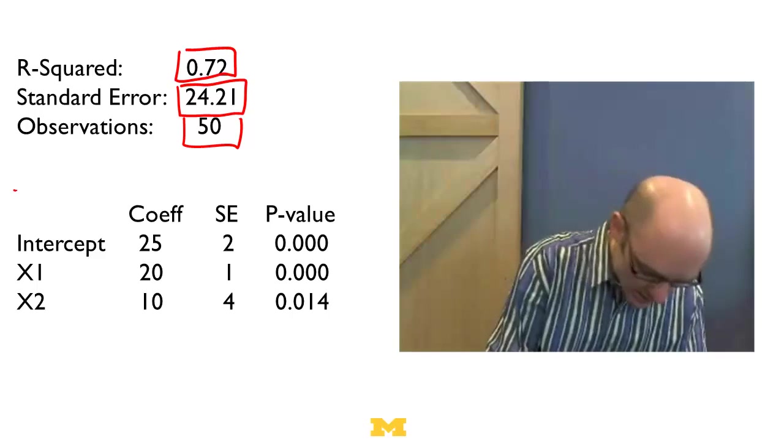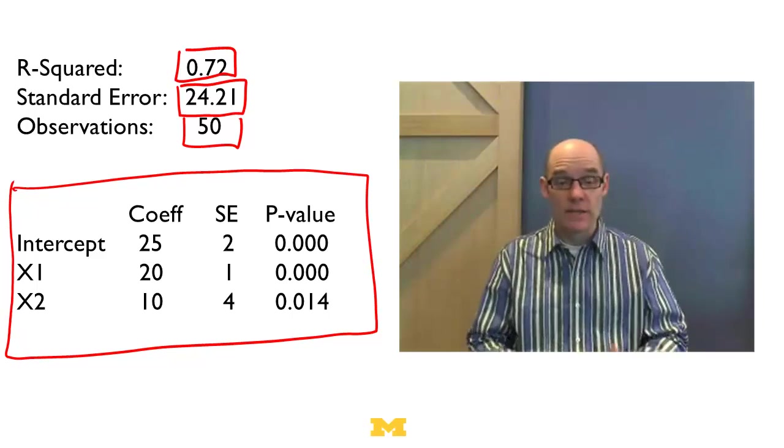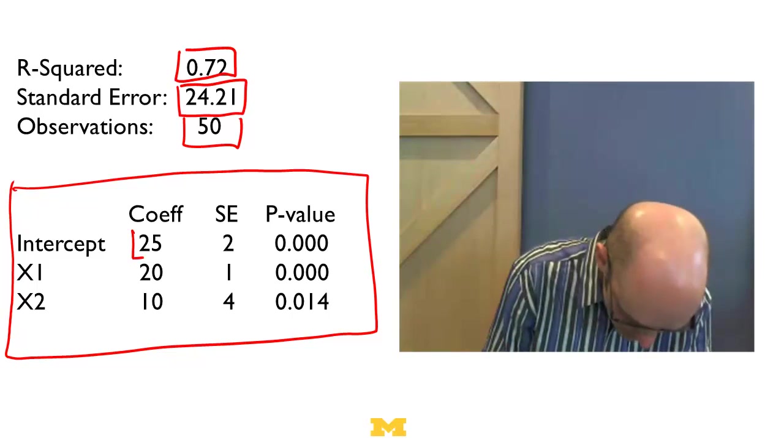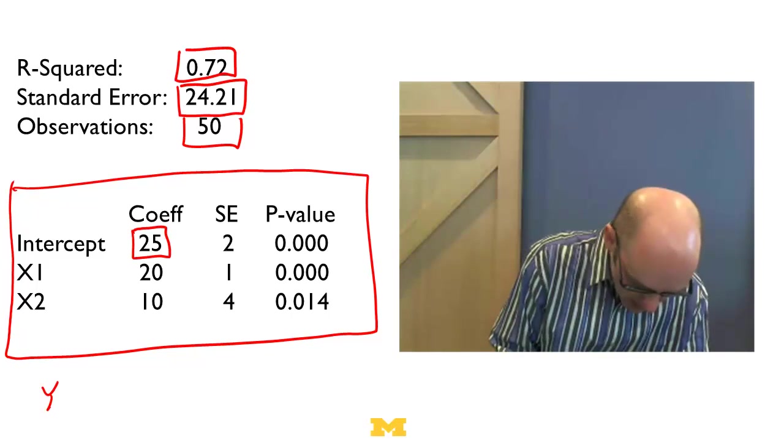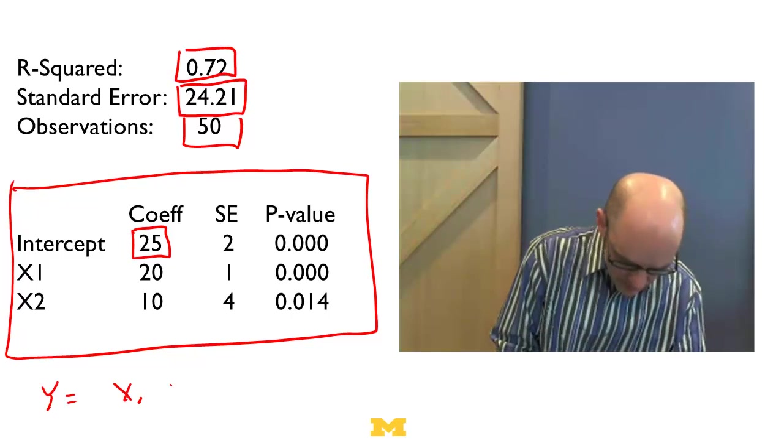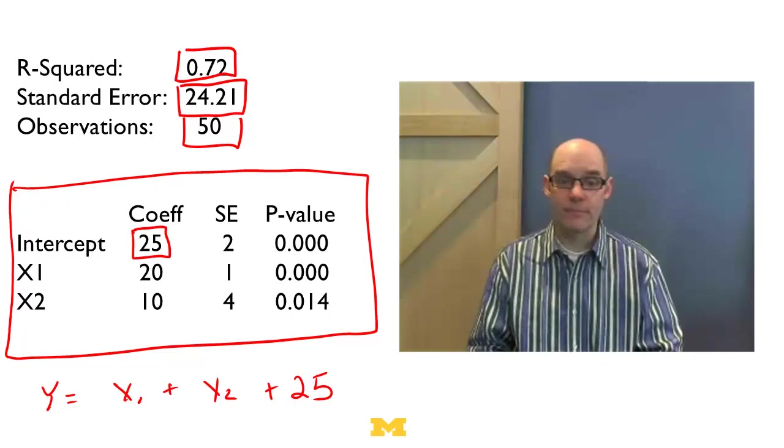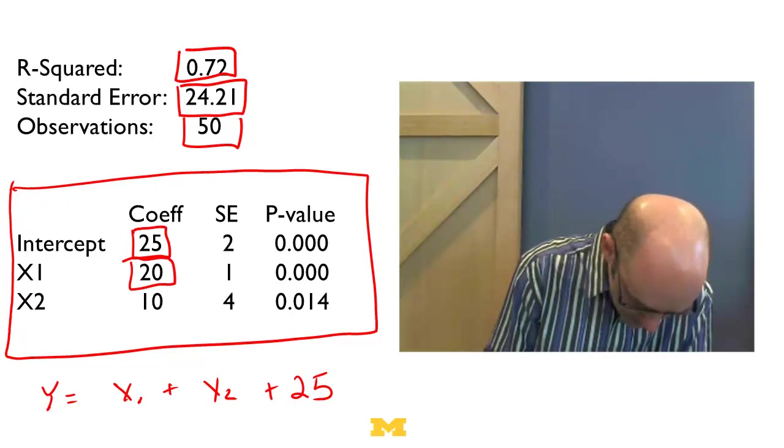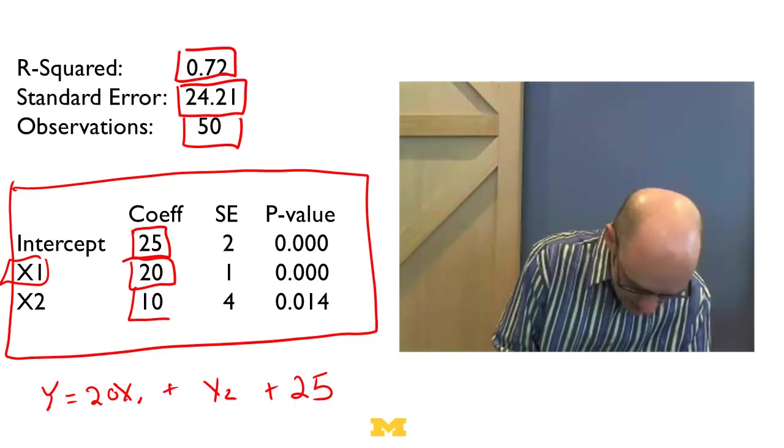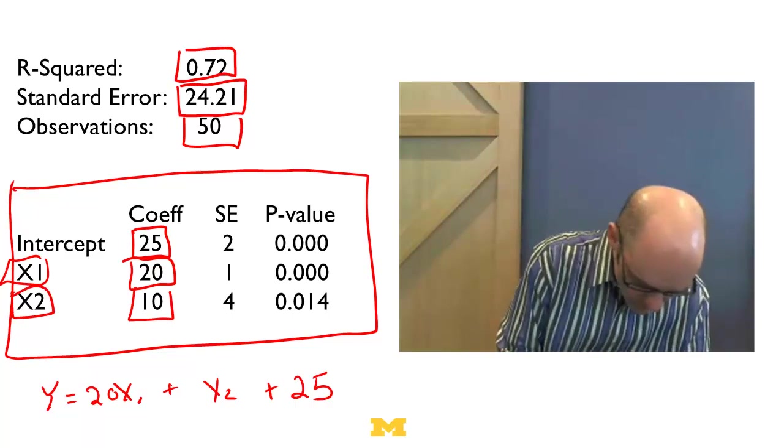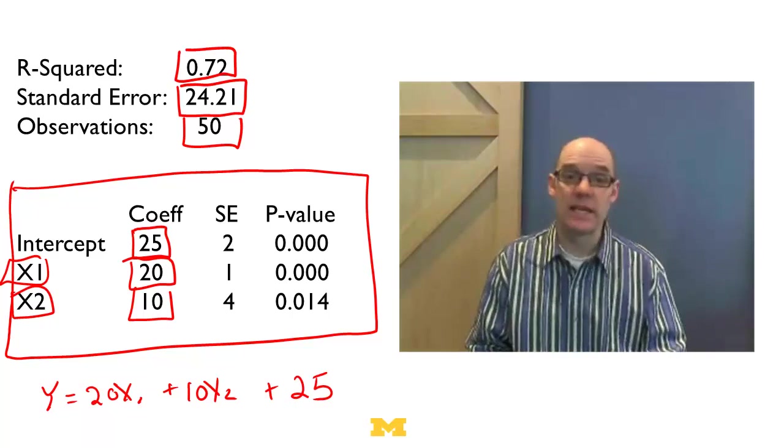All right, now when we look down at this part down here, this whole part of it, this is telling us something about what our linear regression model is saying about the coefficients and the intercept. So the first thing we notice, this 25 here, is the intercept. And so that's saying, our final regression equation is going to look like y equals something times x1, plus something times x2, plus 25. Now this next term here, this 20, is telling us that the coefficient of x1 is 20. So it's going to be 20x1, and then this 10 corresponds to x2, plus 10x2.